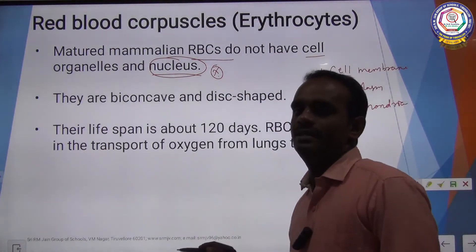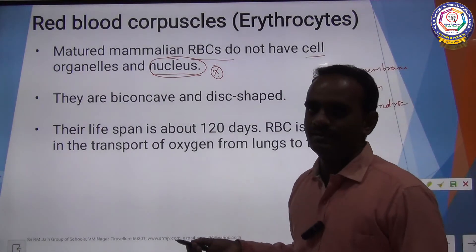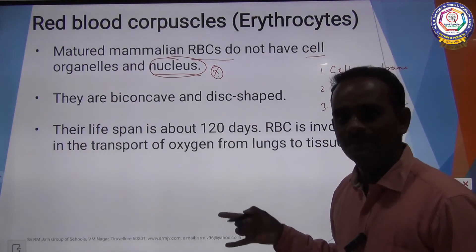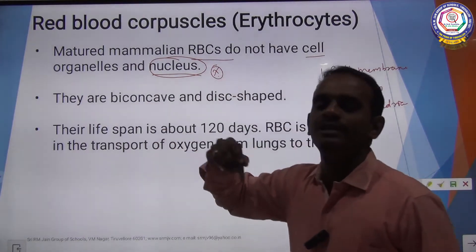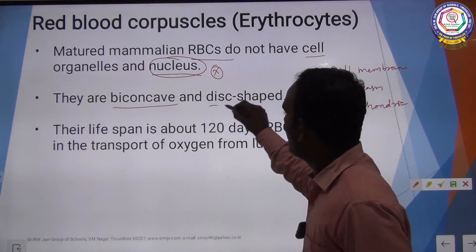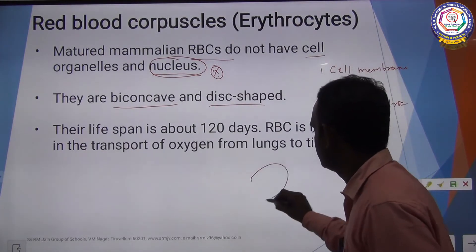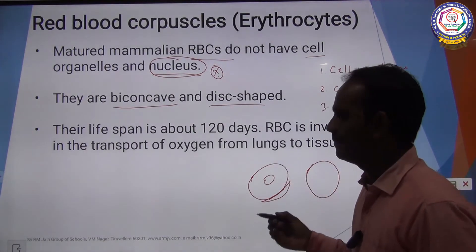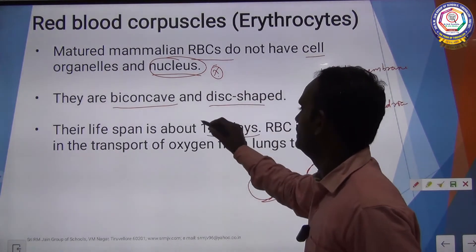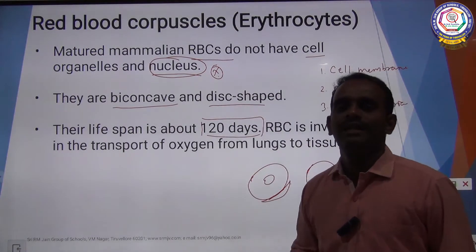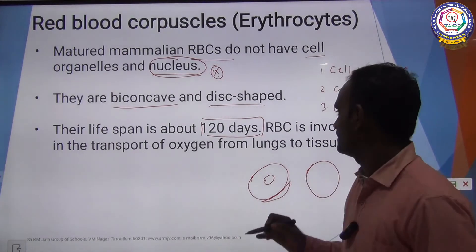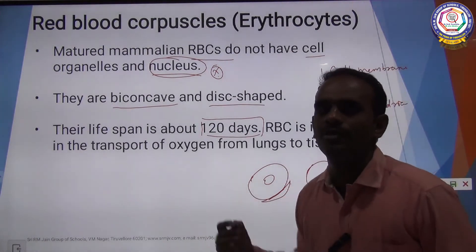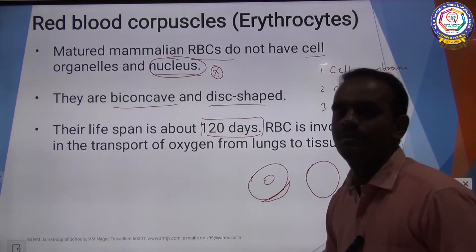Usually every cell is made up of cell organelles, especially nucleus. But only the mature RBC does not have a nucleus. The shape of RBC is biconcave and disc-shaped. The lifespan of RBC is 120 days. The main function of RBC is transport of oxygen from one part of the body to another.